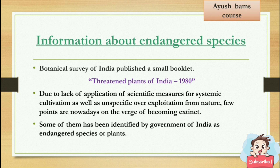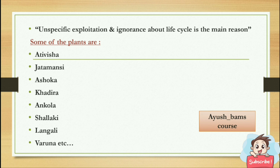Information about endangered species: the Botanical Survey of India published a booklet called 'Threatened Plants of India' in 1980. Due to lack of application of scientific measures for systematic cultivation and unspecific over-exploitation from nature, a few plants are on the verge of becoming extinct. Some have been identified by the Government of India as endangered species. Unspecific exploitation and ignorance about life cycle is the main reason.